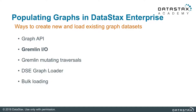We'll be talking all about importing and exporting graphs with Gremlin IO. Gremlin IO is just one of five different ways you can create and load existing graphs into DataStax Enterprise Graph. The Graph API is a method used when creating small to medium-sized graphs, executing individual statements in the Gremlin console or in DataStax Studio.